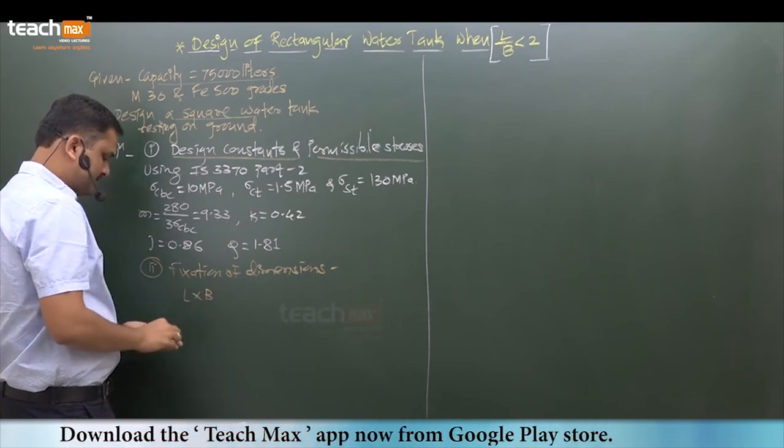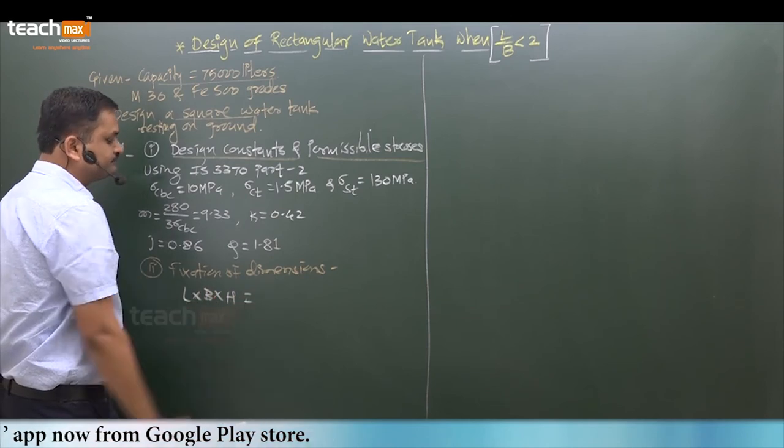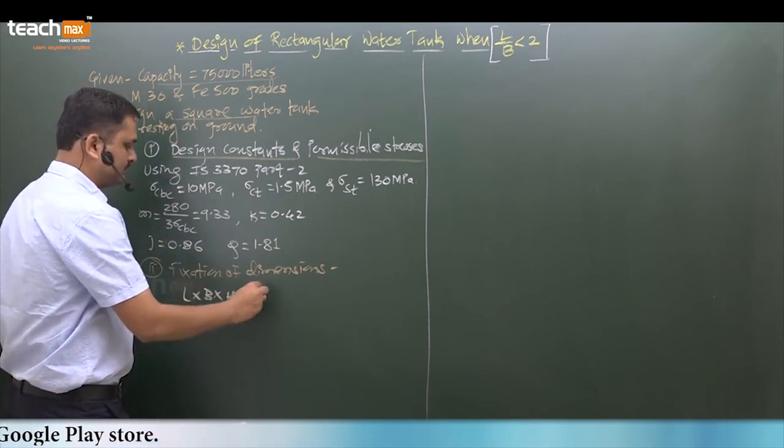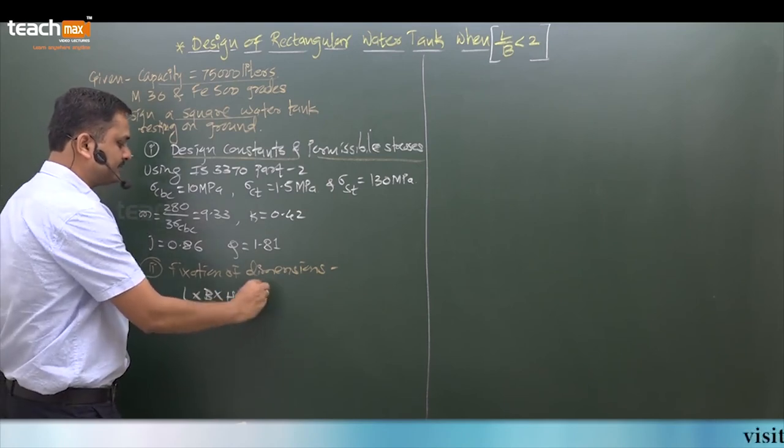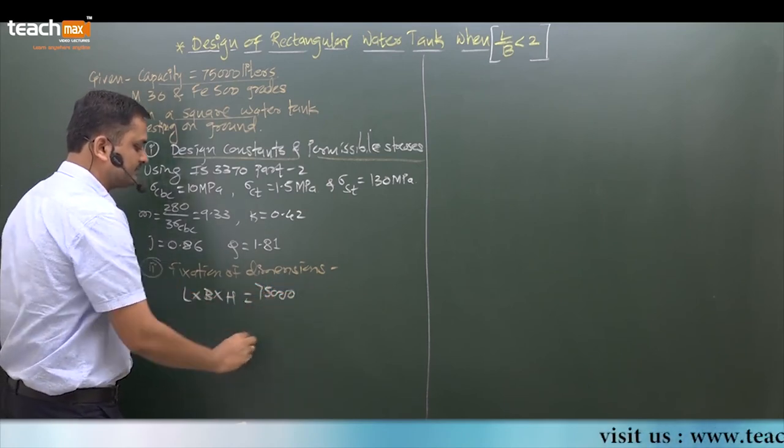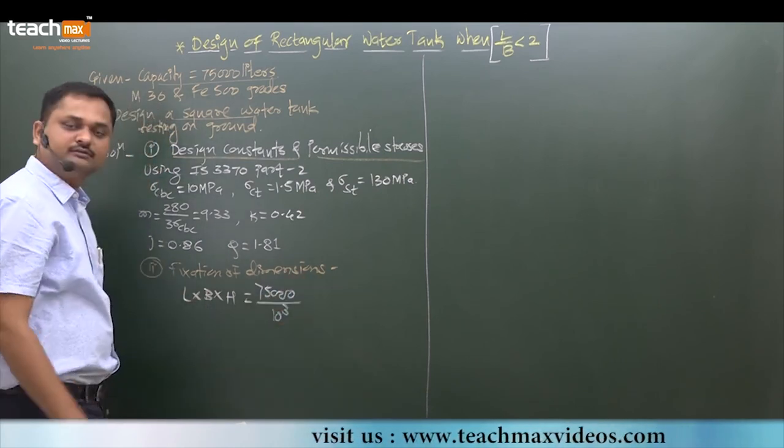L into B into H - you can equate to volume or capacity, and that capacity is 75,000 liters. Thus divided by 10 raised to 3.